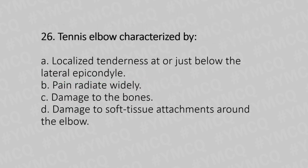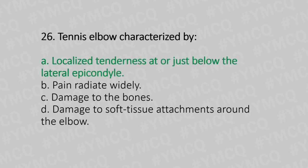Now let's move to question number 26. Tennis elbow is characterized by. Option A: localized tenderness at or just below the lateral epicondyle. Option B: pain radiates distally. Option C: damage to the bones. Option D: damage to soft tissue attachment around the elbow. And the answer is Option A, localized tenderness at or just below the lateral epicondyle.